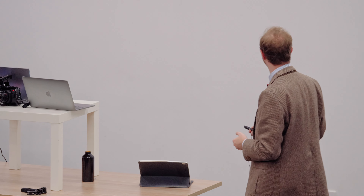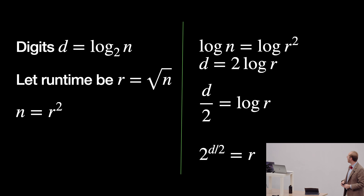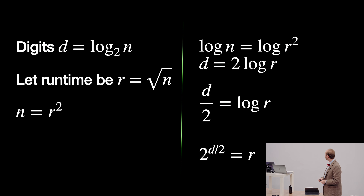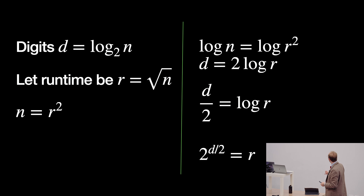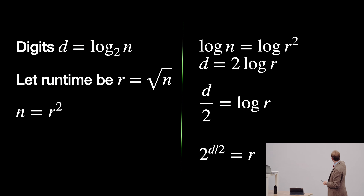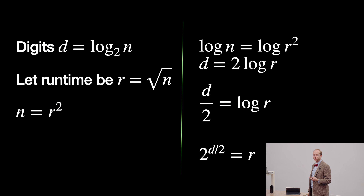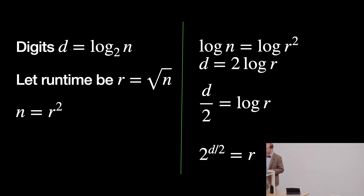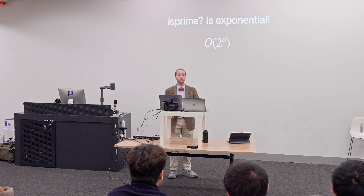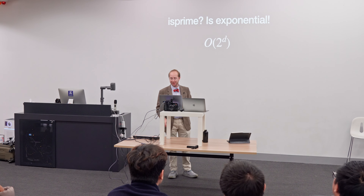We should think about runtime not in the size of n as a decimal number but in how many digits it has. We count the digits by taking log base 2 of n. Setting the runtime equal to √n in terms of magnitude, and substituting d (the number of digits) instead of n, we get that this function actually takes 2^(d/2) steps — which is O(2^d). This is exponential: as we increase the number of digits, the amount of time grows really, really quickly.